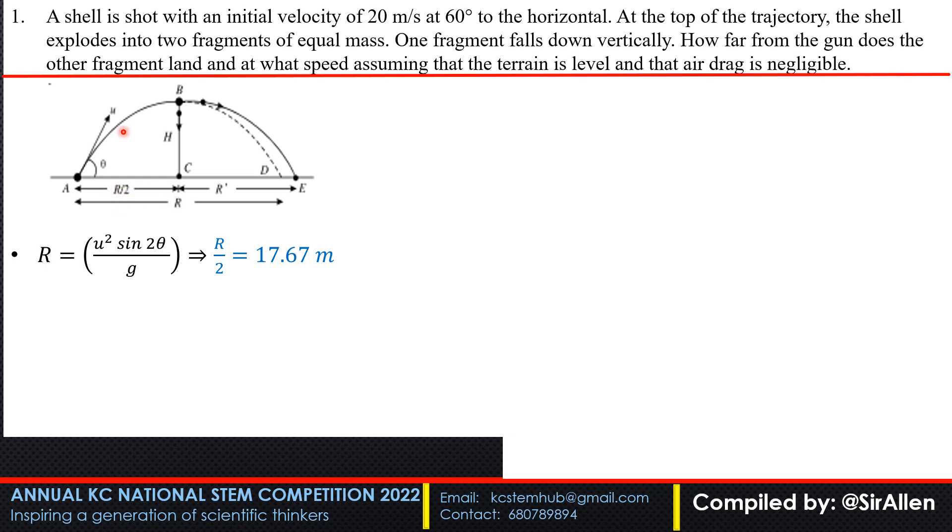First, let's get the first part of the range. The explosion happens at the top, so we want range over 2. Range generally is u squared sine 2 theta over g. When you put in u which is 20 meters per second, sine 2 theta, and g which is 9.8, you get R over 2 at 17.67 meters.